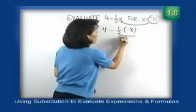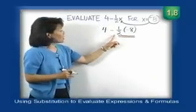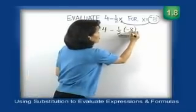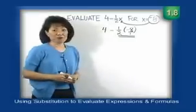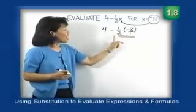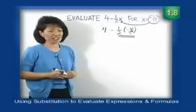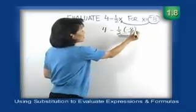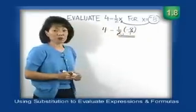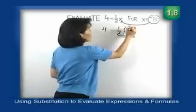We are going to multiply 1/2 times negative 8. Since we're multiplying a fraction times an integer, we can make the integer into a fraction by putting it over 1. When we multiply these two fractions, let's cancel out any common factors to make the multiplication easier. We see that 2 and 8 have a common factor of 2.